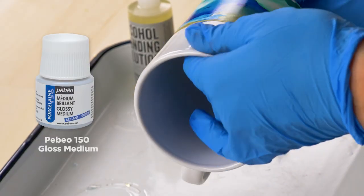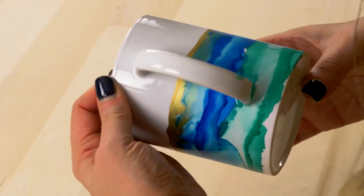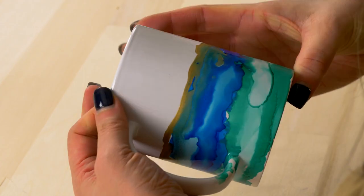Seal the mug using Pebeo 150 gloss medium which you can bake in the oven for 35 minutes per the instructions, which makes it dishwasher safe.